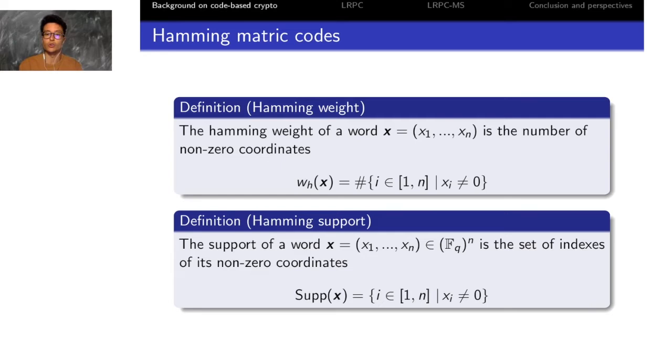The mostly used metric in coding theory is the Hamming metric, for which a word has a Hamming weight which is the number of its non-zero coordinates.